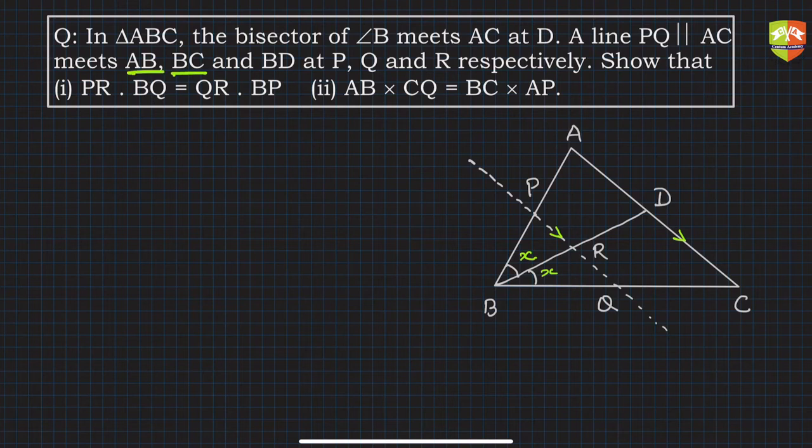R is on BD. We have to show two parts: (i) PR × BQ = QR × BP, and (ii) AB × CQ = BC × AP.